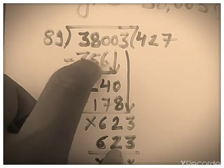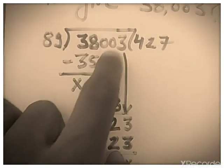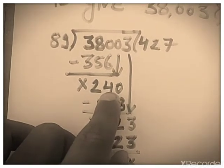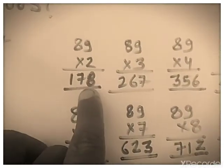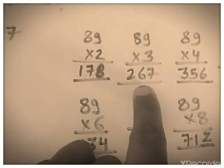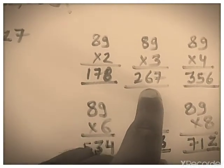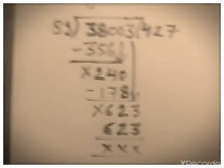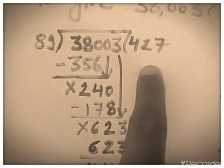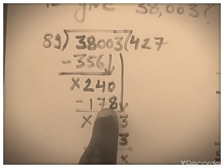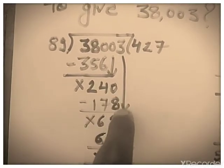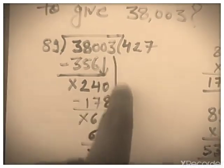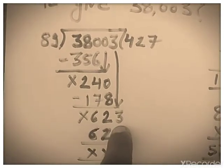Subtract 356 from 380 — we get 24. Take the next digit, it becomes 240. Now 89 × 2 is 178 and 89 × 3 is 267; 267 is greater than 240, so I take 89 × 2 = 178. Subtract 178 from 240 — we get 62. Take the next digit 3, it becomes 623.